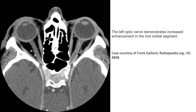Let's see the case on CT imaging. This case of optic neuritis shows findings on CT: the left optic nerve demonstrates increased enhancement in the mid-orbital segment compared to the right, with mildly increased perineural process.